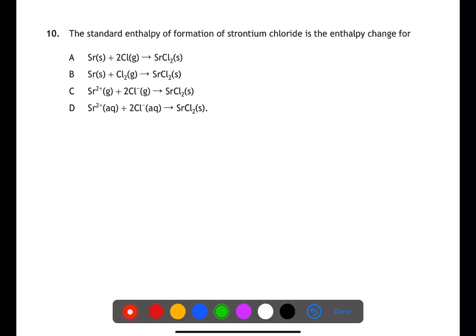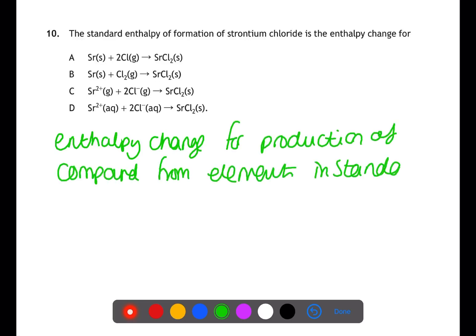For question 10, you need to know the definition of the standard enthalpy of formation. This is the enthalpy change for the production of a compound from its elements in their standard states. Chlorine's standard state is to be a diatomic gas. Therefore A cannot be the answer. Strontium exists as a solid metal and strontium chloride will exist as a solid. Therefore B is the answer.